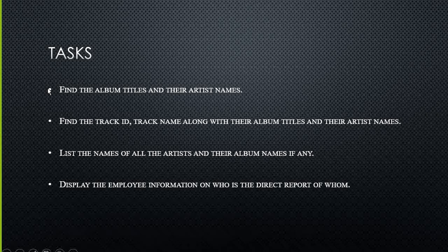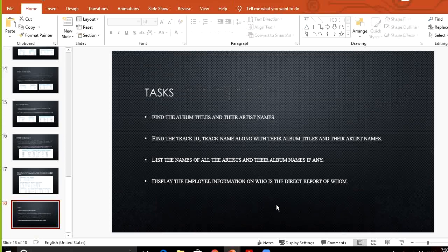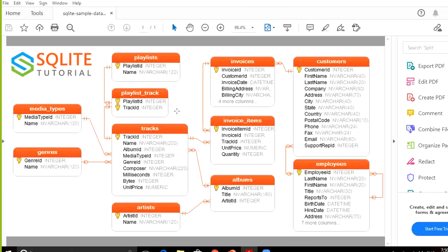In our last lecture we discussed joins and different types of join in detail with examples. In today's session we will perform different tasks related to join in SQL. We will apply these tasks on the SQLite sample database chinook.db. The first task is to find the album titles and their artist name. This information is present in two different tables: artists and albums, and we have artist_id as the common column between them.